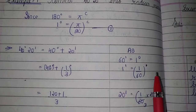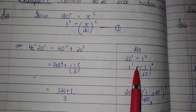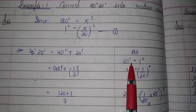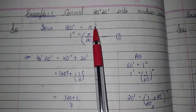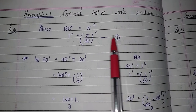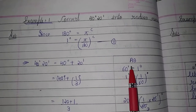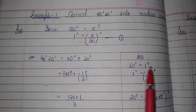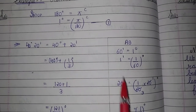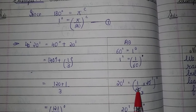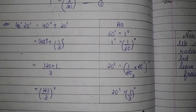Since 60 minutes is equal to 1 degree, we convert the minutes to degrees. So 1 minute is equal to 1 upon 60 degree. Therefore, 20 minutes is equal to 1 upon 60 multiplied by 20, which gives 20 minutes equal to 1 upon 3 degree.